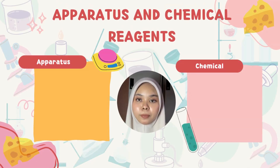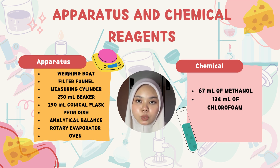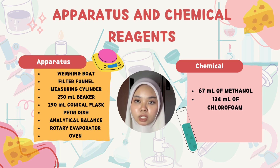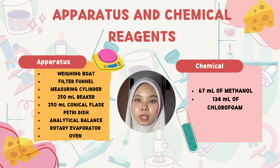Here are the apparatus and chemical reagents that we use in this experiment. For the apparatus, we use a weighing board, filter funnel, measuring cylinder, 250 ml beaker, 250 ml conical flask, petri dish, analytical balance, rotary evaporator, and oven. For the chemical reagents, we use 67 ml of methanol and 134 ml of chloroform.